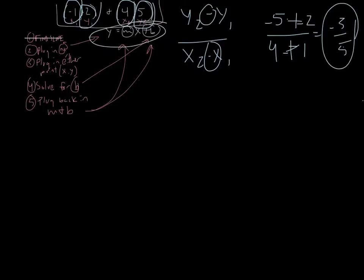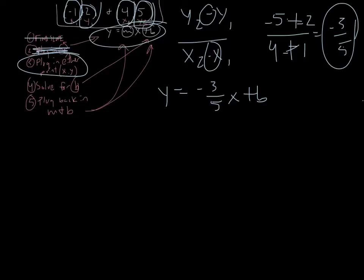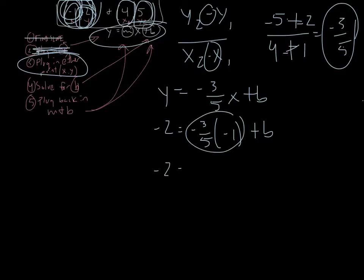Now we just plug in our m into the equation, so it would be y equals negative 3 over 5 x plus b. Done with that part. Now plug in either point — I'm going to go with negative 1 and negative 2. So plug in my y which is negative 2, that equals negative 3 over 5, then plug in negative 1, so it's times negative 1, plus b. Multiply those and it turns into positive 3 over 5 plus b. Now we're solving for b.